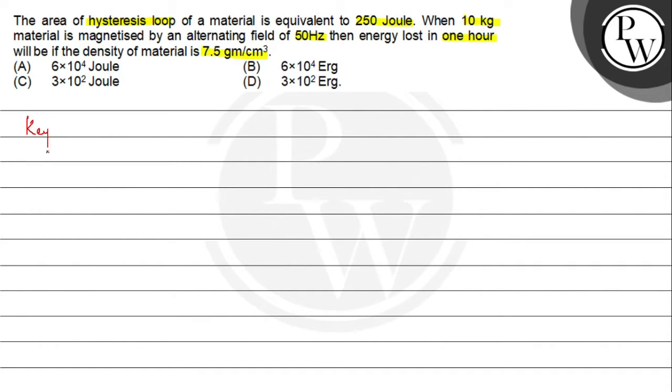Let us see the key concept. The energy loss within a hysteresis loop, the total loss is given by n times A times V times t, where n is the frequency, V is the volume, and t is time.